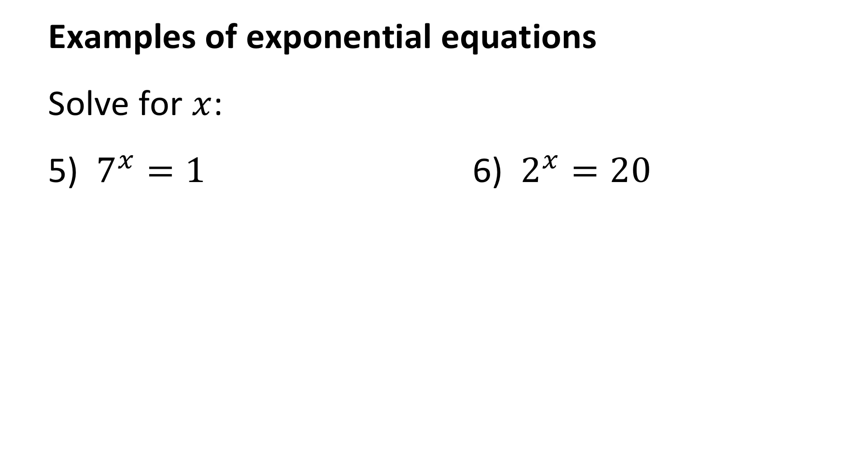In question 5, I'm going to use the same strategy. I'm going to make my bases the same. What exponent can I use for 7 to make the whole power equal to 1? Surely the exponent must be 0. 7 to the power of 0 equals 1. Therefore, x is 0.